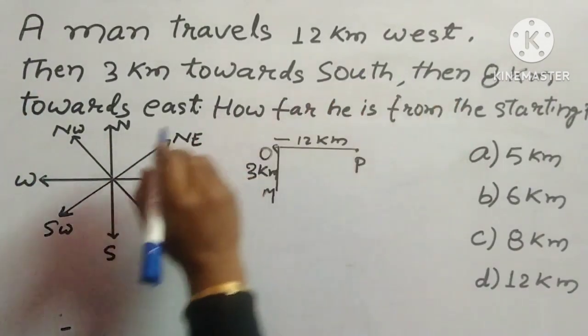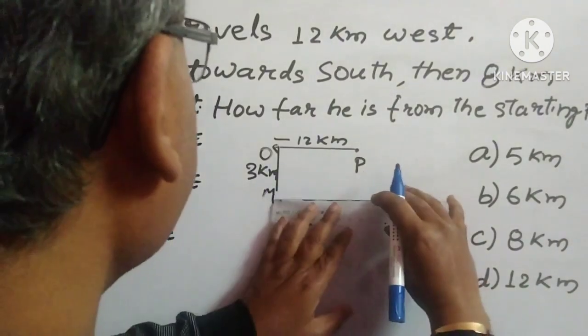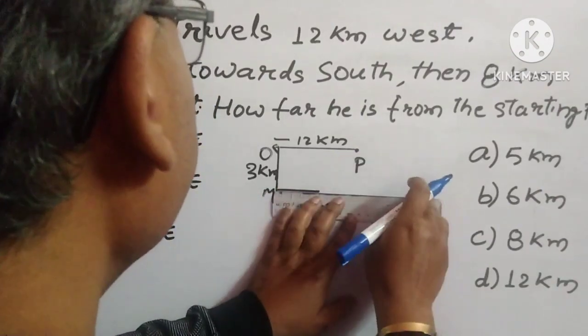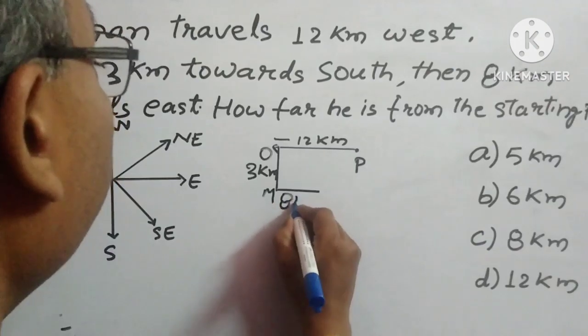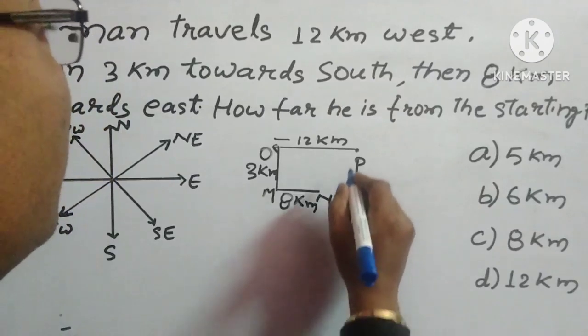And then 8 km towards East. This is East, in this direction, so it is 8 km. We will draw this as 8 km and give it a name N.